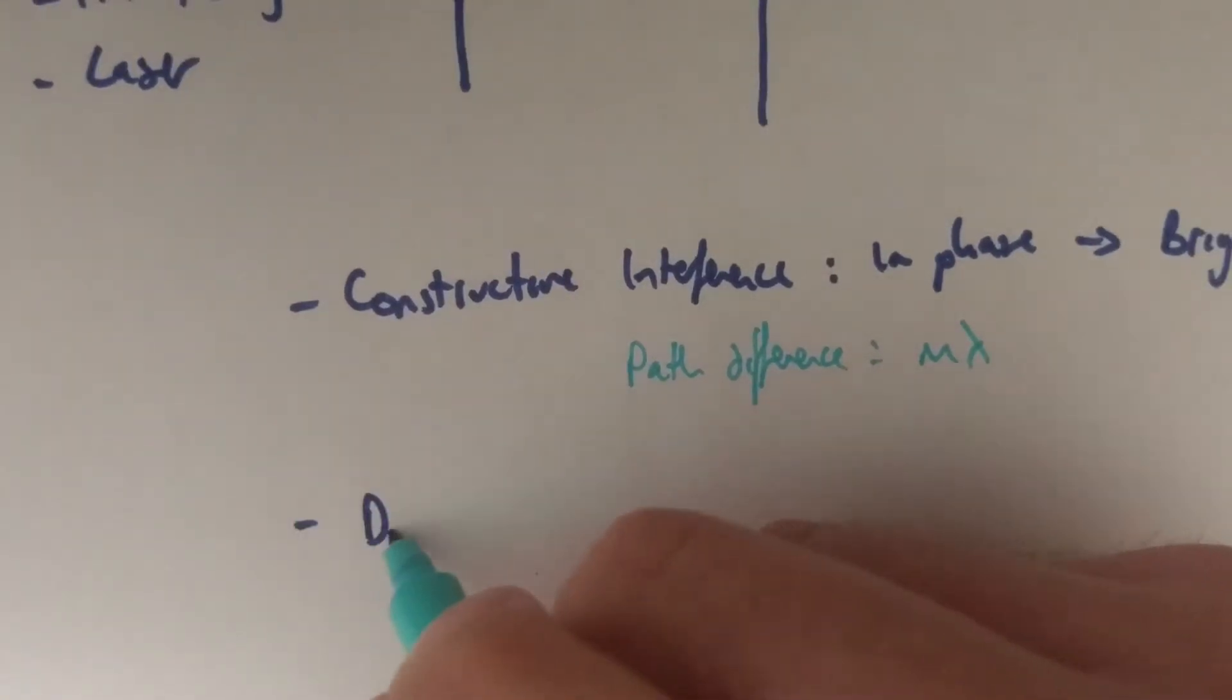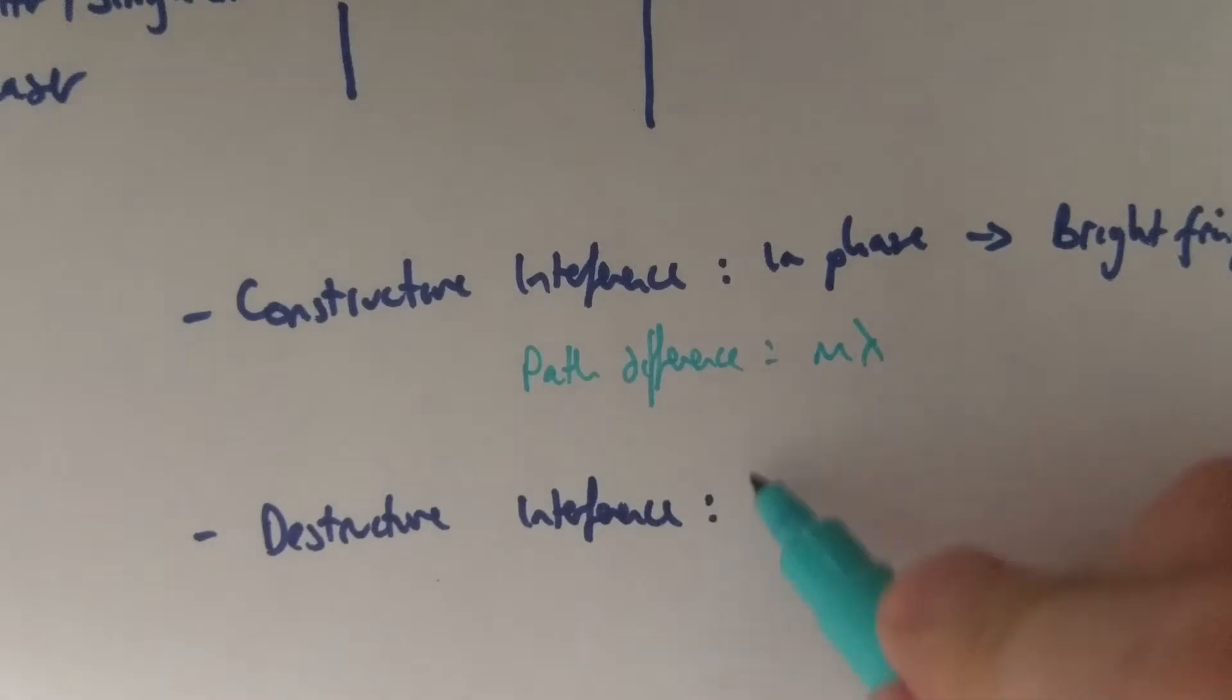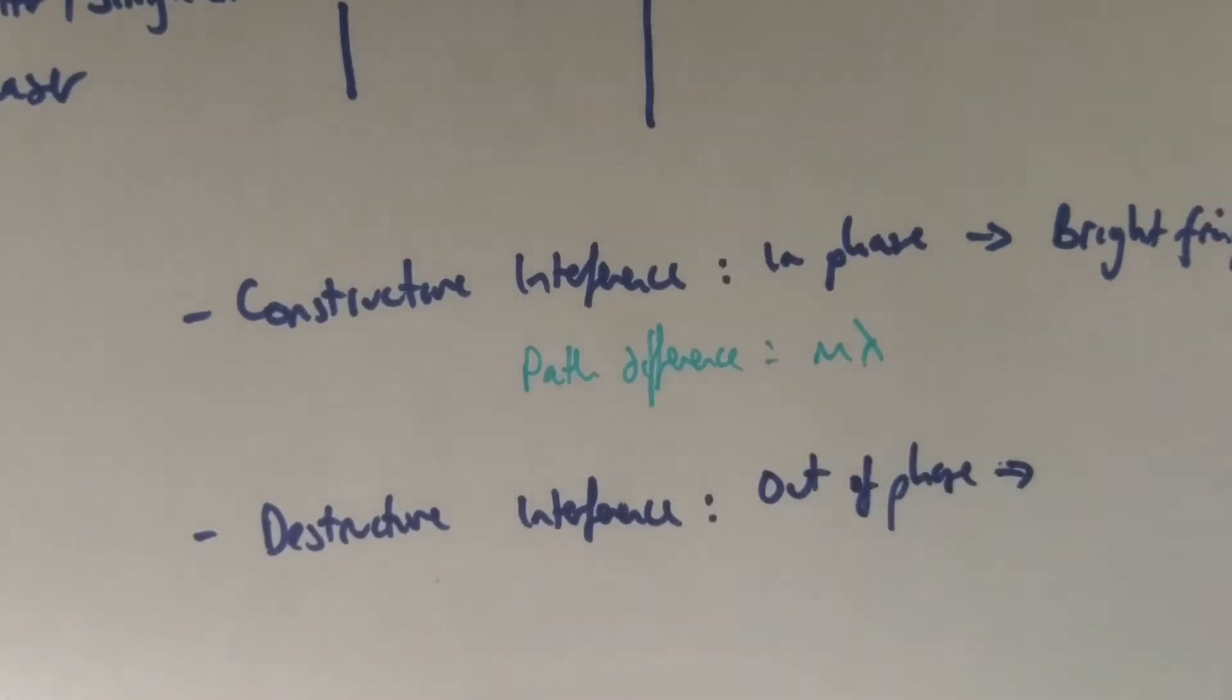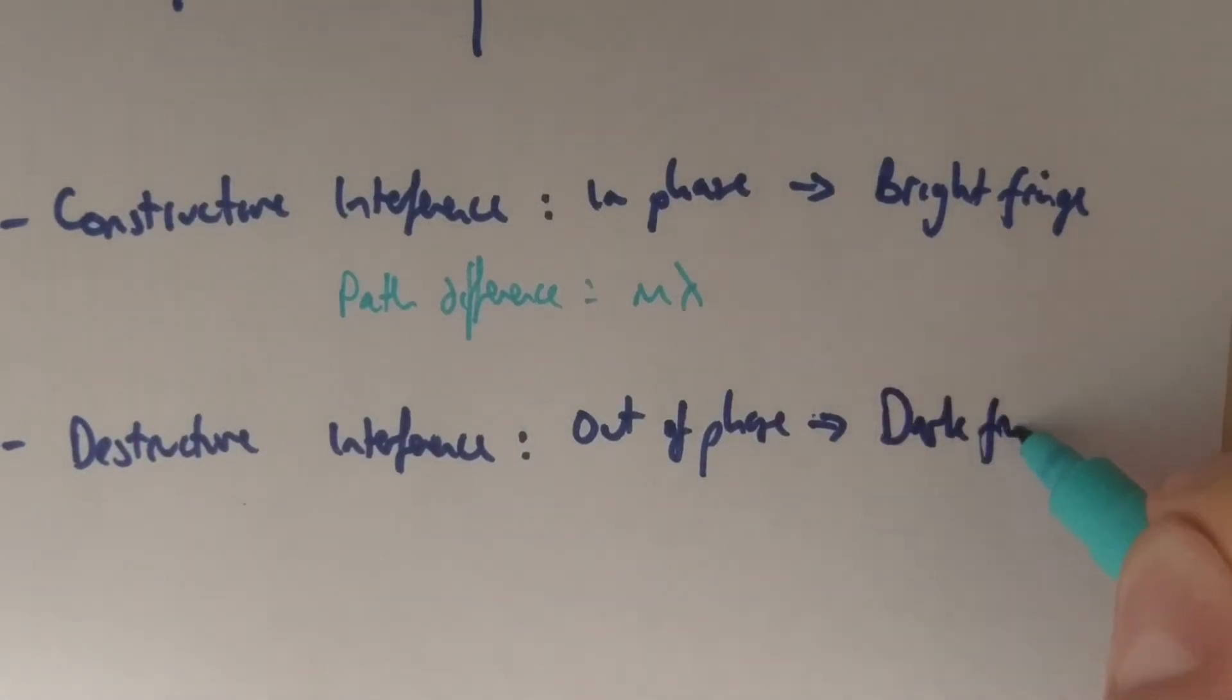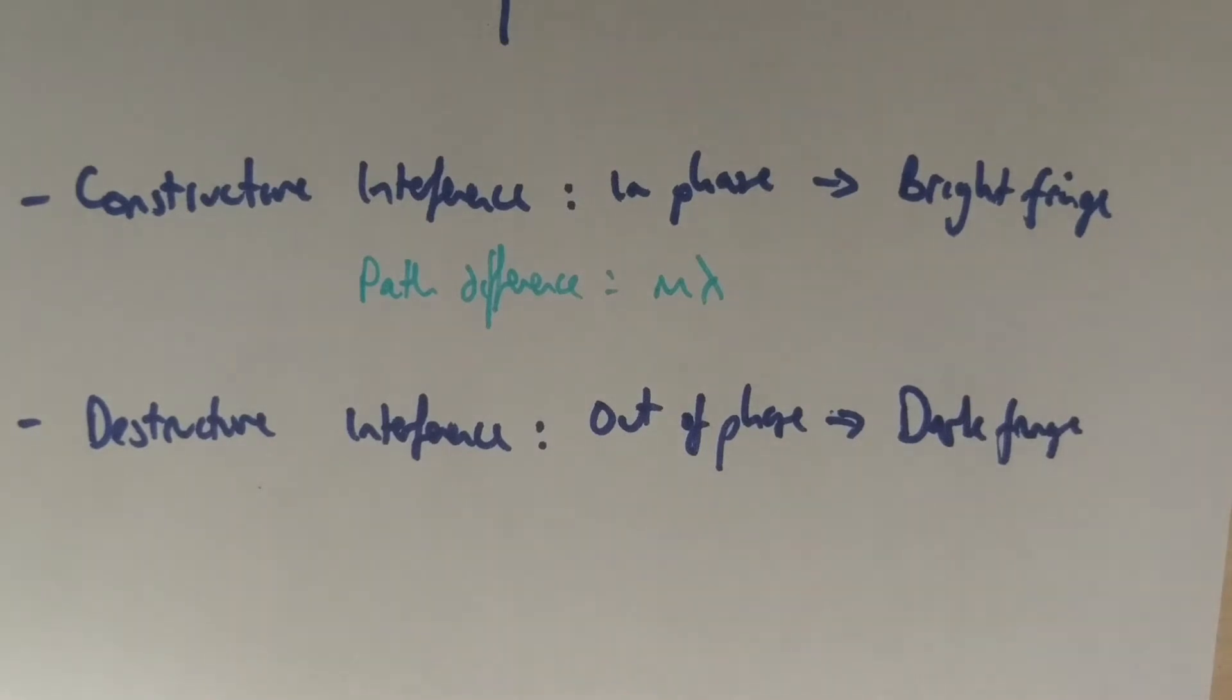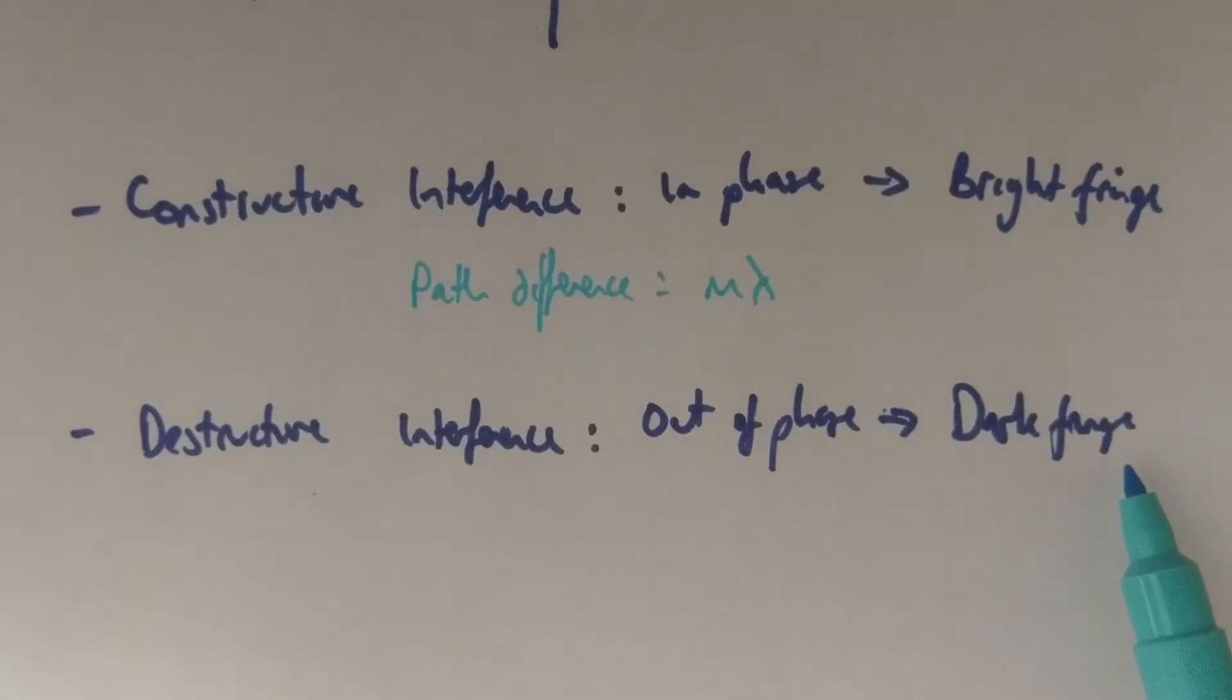There are also, at points, destructive interference. This happens when our waves meet and they are out of phase. We've got a pi phase difference between them, or 180 degrees, and we get a dark fringe. Whereas in the past at our constructive interference they were reinforcing each other, now we've got cancellation, destructive interference, and we're getting a dark fringe.